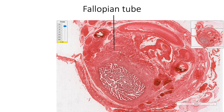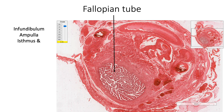Fallopian tubes extend on both sides of the uterus towards the ovaries. Each fallopian tube is about 10 centimeters long and has four segments from lateral to medial side: the infundibulum with fimbria, ampulla, isthmus, and intramural parts.